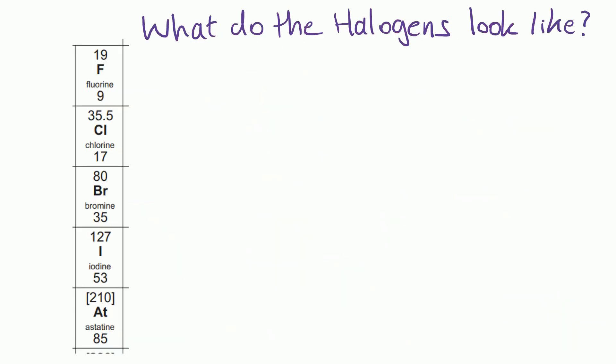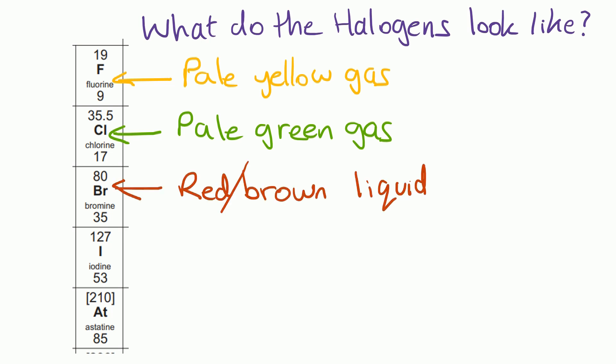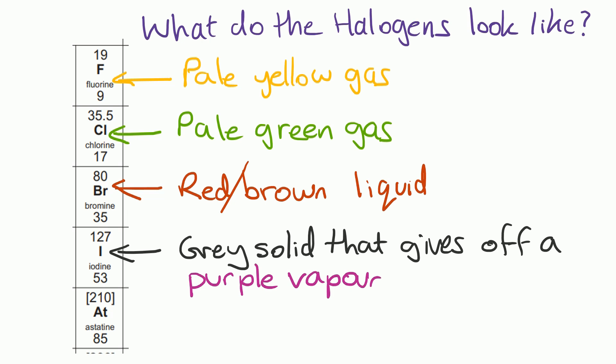For your exams you are expected to know what the halogens actually look like in real life. So fluorine is a very pale yellow gas. Chlorine is a pale yellowy green gas. Bromine is a reddy brown liquid. And iodine is a grey solid that gives off a lovely purple vapour. It turns straight from a solid to a vapour. And we call that process sublimation.